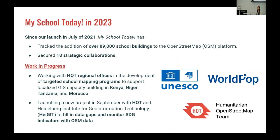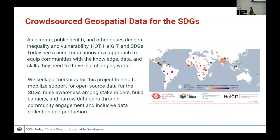We've also secured 18 strategic collaborations with people who work in-country, distributing our training materials and helping people map their schools. We are also launching a new project in September with Humanitarian OpenStreetMap and HIGIT to continue filling in data gaps and monitoring SDG indicators with OSM data. We've gone through all of the SDGs and their indicators, identified which ones can be monitored using OpenStreetMap data with a similar analysis to My School Today, and will launch that project in a few months. If anyone wants to get involved, feel free to talk to me afterwards.